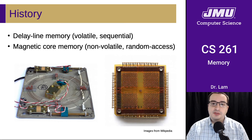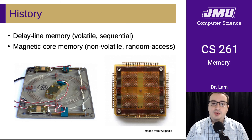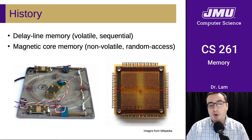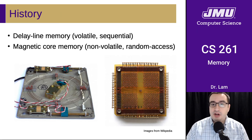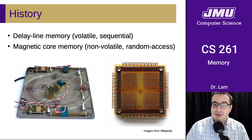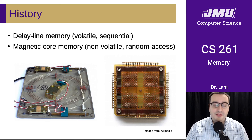Here are two memory technologies that we don't really use anymore. The first is delay line memory, which uses the speed of light essentially to store data. There's a coil of wires and the time it takes for a signal to travel around the wire is used to transmit data from one clock tick to another. It's easy to see why we don't use that anymore — it doesn't scale very well at all.